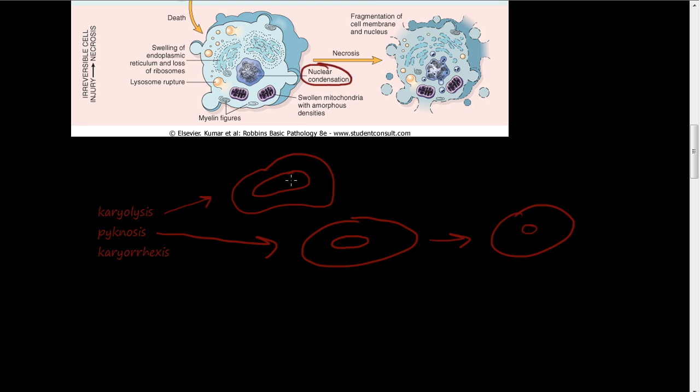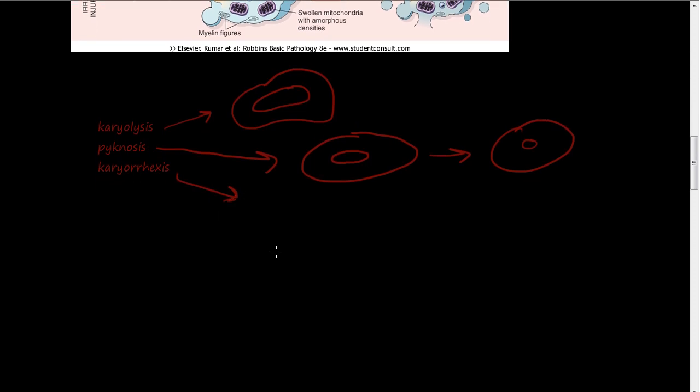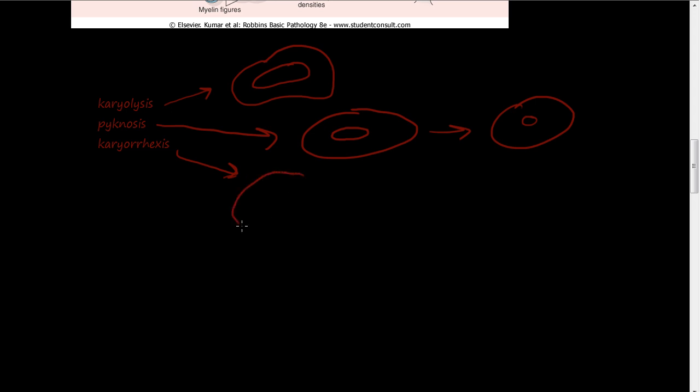And then karyorexis is the nucleus kind of starts breaking apart. Rexus is rupture, but I don't think rupture is the correct term. In medical terminology rexus is rupture and karyo is nucleus, so rexus is rupture.